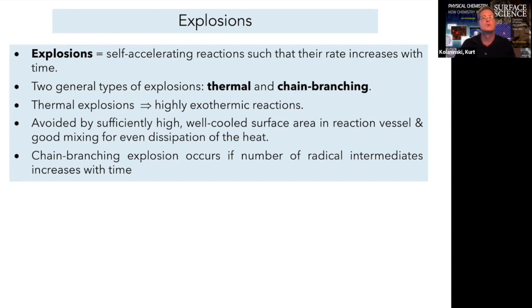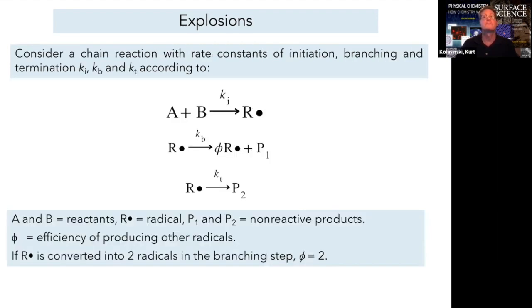Let's explore the kinetics of chain-branching explosions a bit more and chain-branching mechanisms in general. So let's look at what is an idealized three-step mechanism. The first step is the reaction of our reactants, A and B, through an initiation step. And that initiation step generates radicals. The radical species is R-dot.